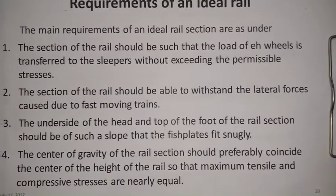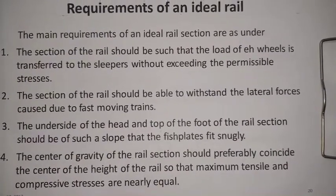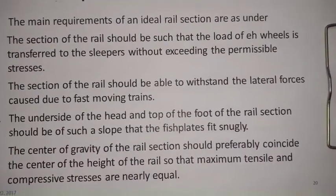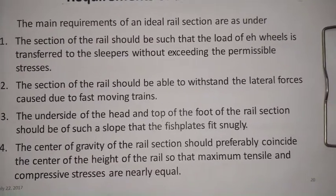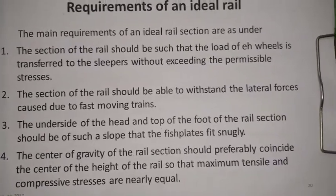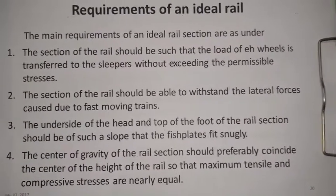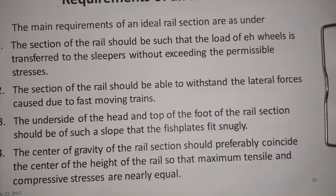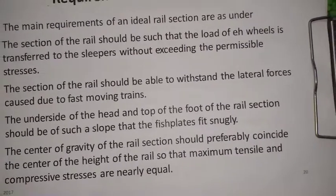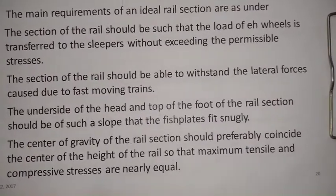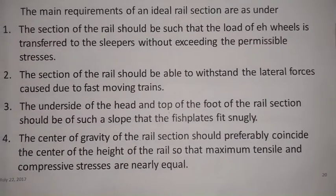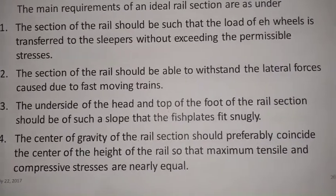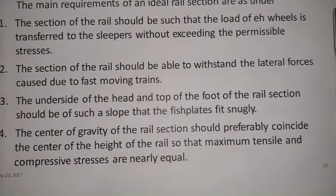Coming back to today's topic, we are seeing about requirements of an ideal rail. The main requirements of an ideal rail section are as follows: the section of the rail should be such that the load of the wheels is transferred to the sleepers without exceeding the permissible stresses. Whatever loads are taken by the rail — thermal stresses, stresses due to vertical loads, and lateral loads — should be within the permissible stresses. It should not undergo more than the expected or designed displacement.